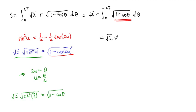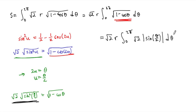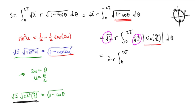Going back to our integral, we have root two times r, integral from zero to two pi of square root of two times the absolute value of sine of theta over two, d-theta. The two square root of two factors combine to give two. As theta goes from zero to two pi, theta over two traverses the upper half of the unit circle, so sine of theta over two is always non-negative. We can drop the absolute value bars, giving us two r times the integral from zero to two pi of sine of theta over two, d-theta.